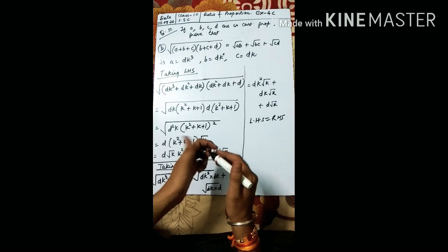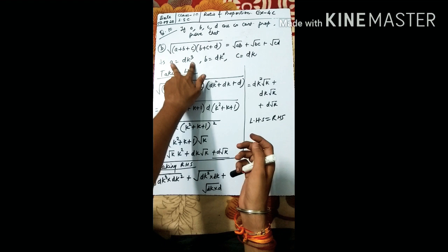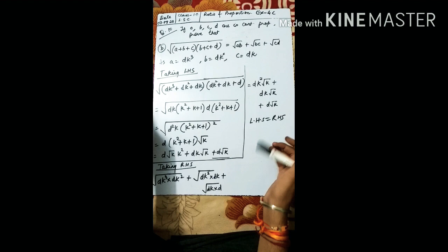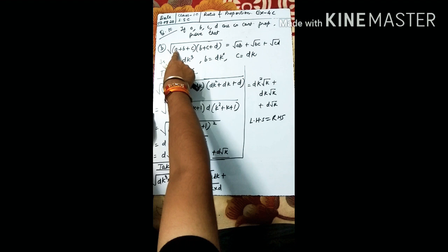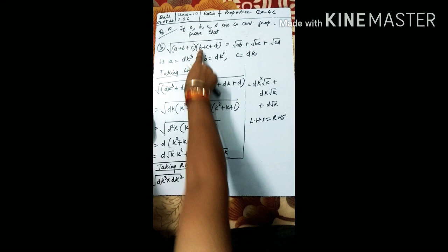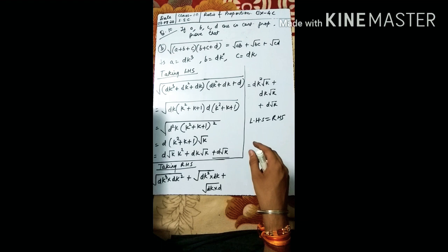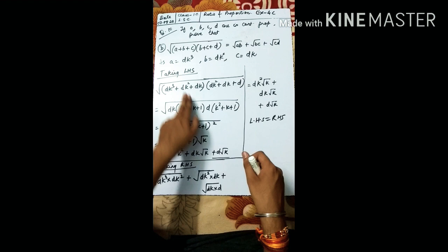Now the 10th question. We already know a = dk³, b = dk², c = dk from the previous question. Taking LHS, putting all the values: a = dk³, b = dk², c = dk, d = d. From the first bracket we can take dk common, giving k² + k + 1... wait, it will be k(k + 1). From the second bracket we take d common, giving k² + k + 1.